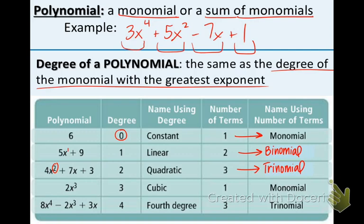Next one, 2x to the third. The degree is 3 because that is the biggest and only exponent. It is called a cubic function because there is degree 3. And this is called a monomial because there's only one term.